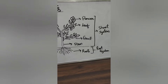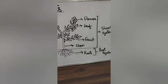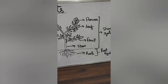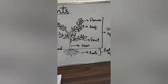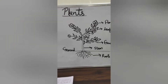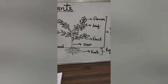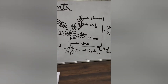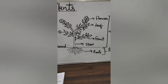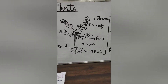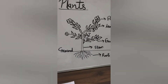The shoot system comprises of flower, leaf, fruit, stem, and buds. The root system is the roots under the ground. Now we will discuss more about the roots and their functions. There are types of roots also. Let's begin with the roots.